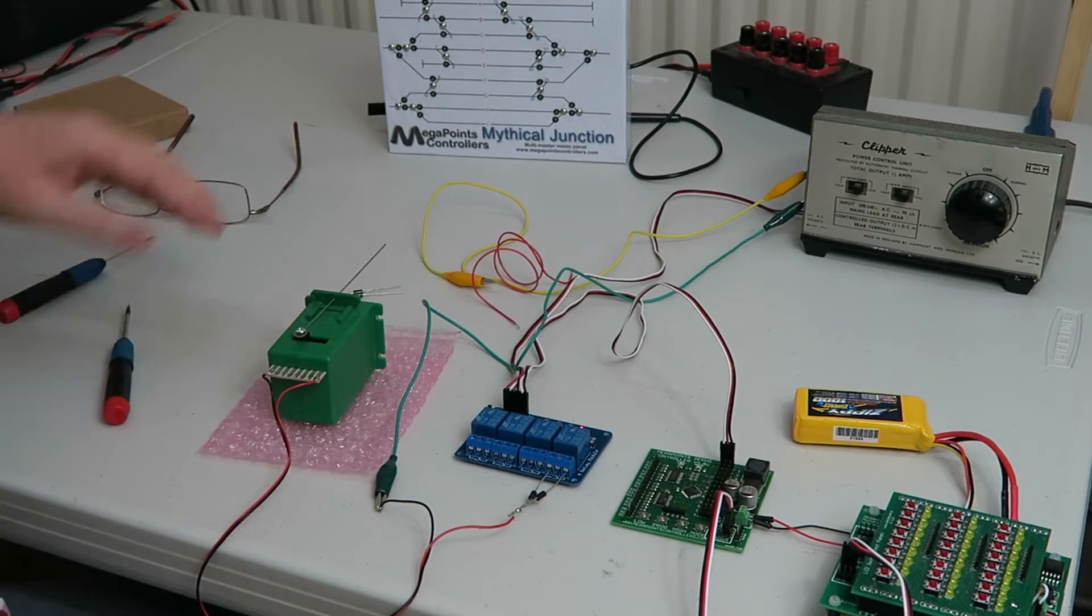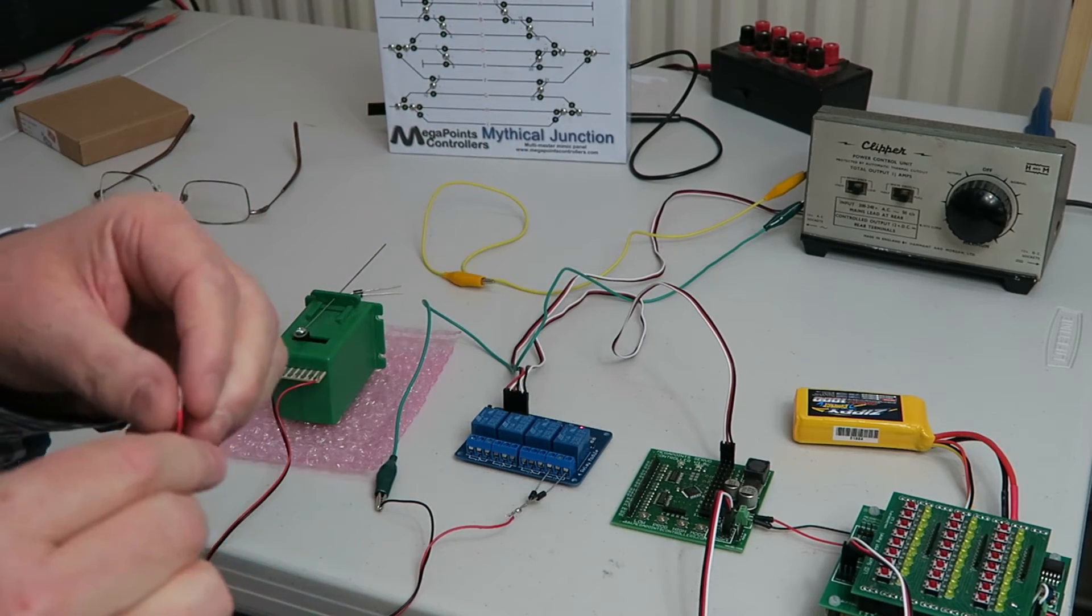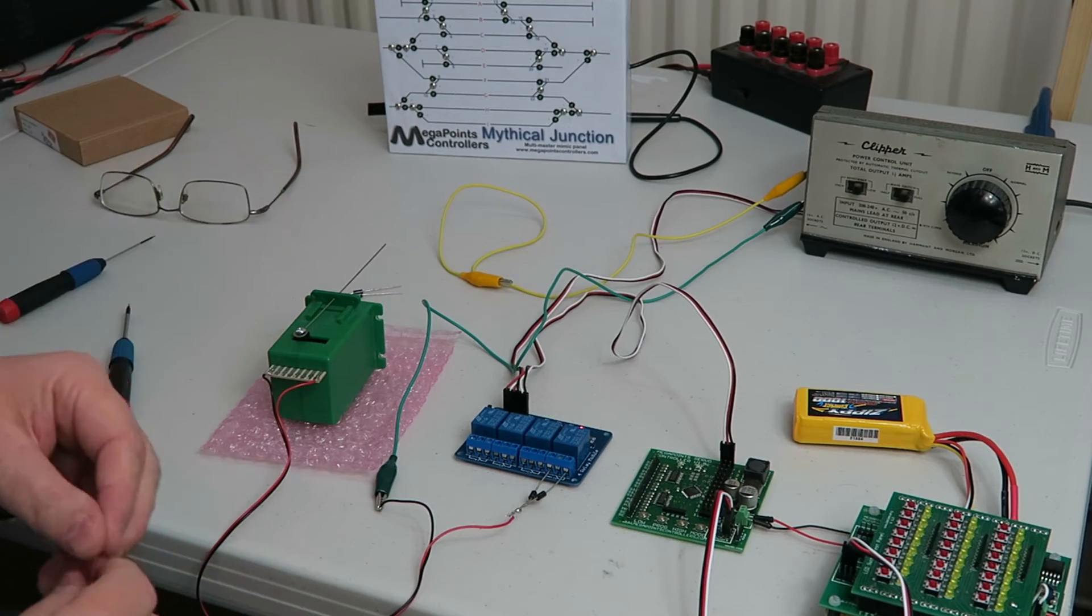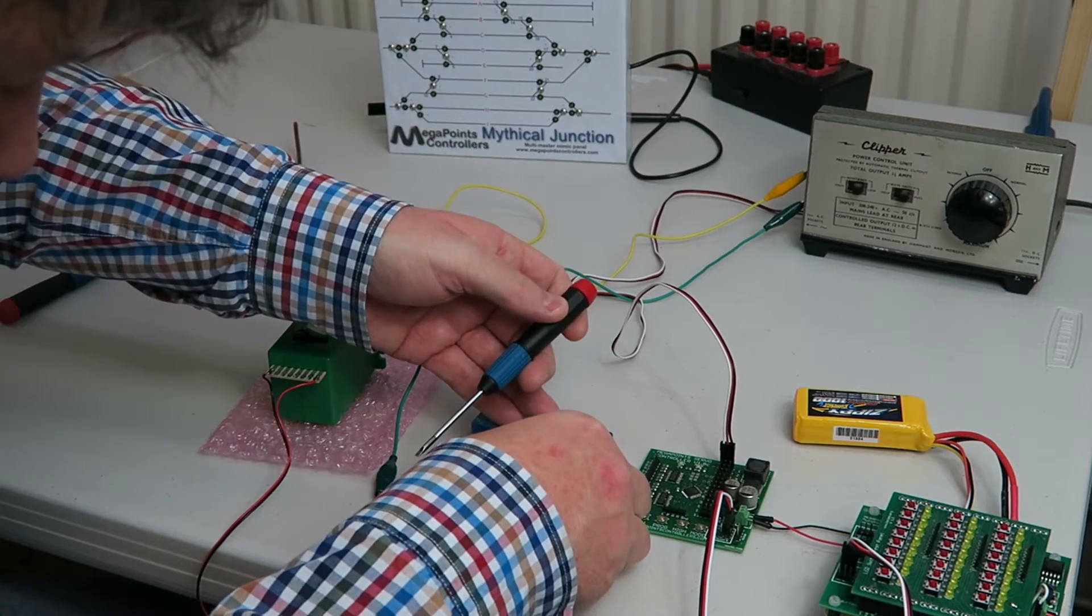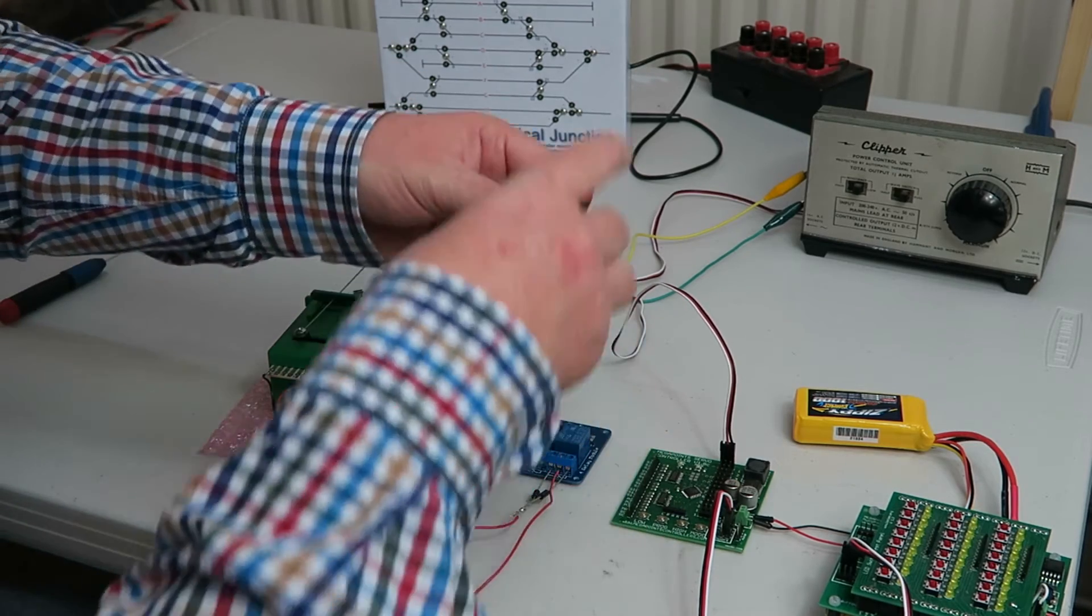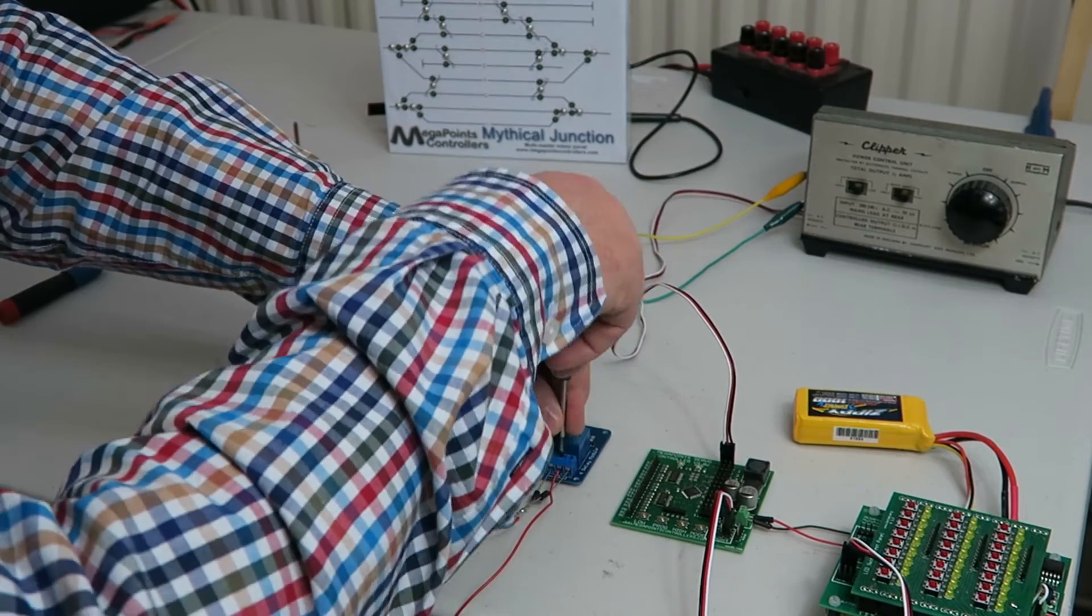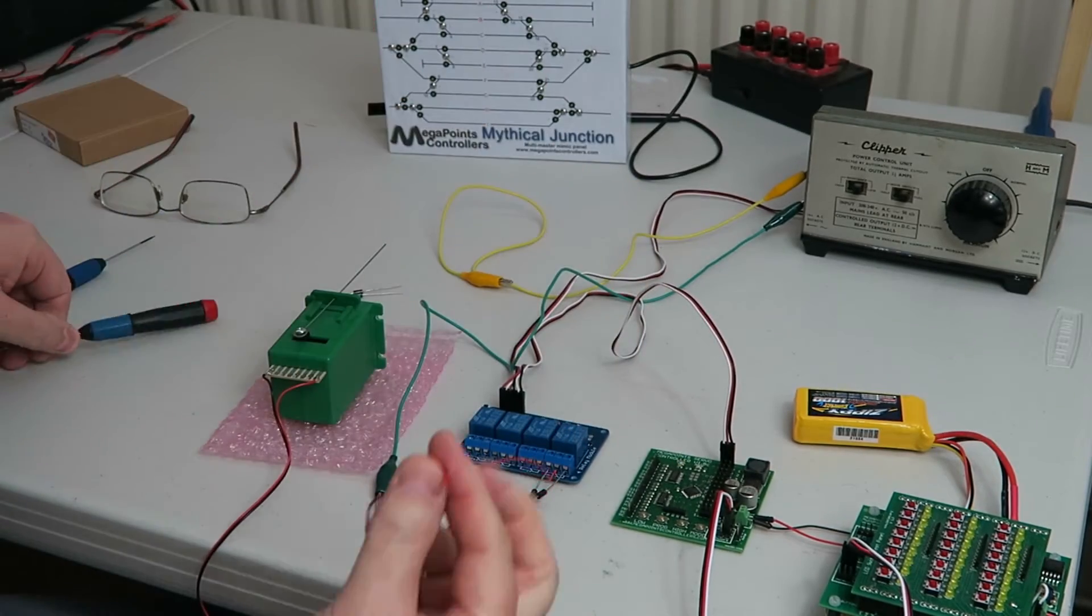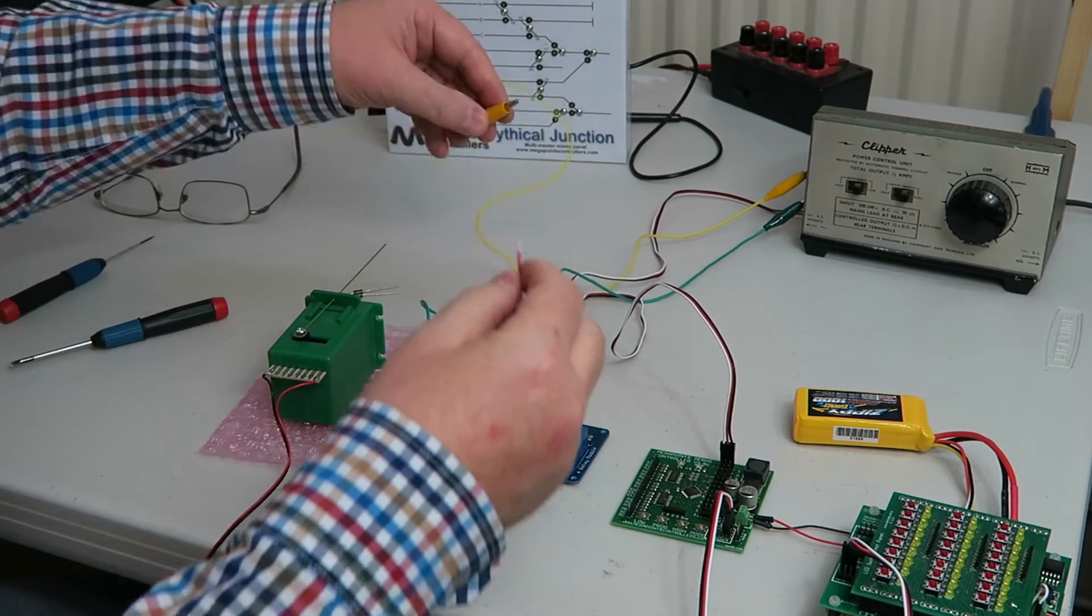And for the centre common connector I'll attach this wire of which the other end will go to the clipper power supply. So this is the centre terminal or the common so let's connect it.